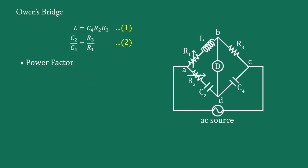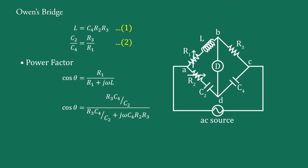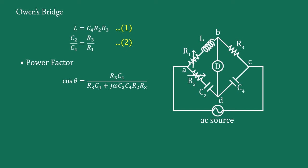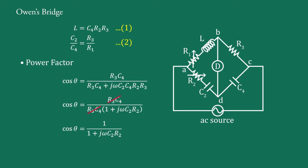Now for power factor cos(theta): for an R1-L series circuit, the power factor is defined as cos(theta) equal to R1 upon the magnitude of R1 plus j-omega-L. Substituting values from equations 1 and 2 and simplifying, we get cos(theta) equal to R3·C4 upon R3·C4 plus j-omega·C2·C4·R2·R3. Taking R3·C4 common from the denominator and cancelling, we get cos(theta) equal to 1 upon 1 plus j-omega·C2·R2. This is the power factor for the R1-L series connection.